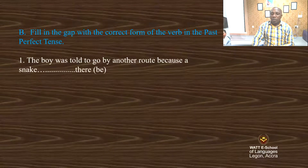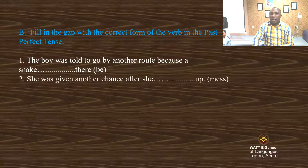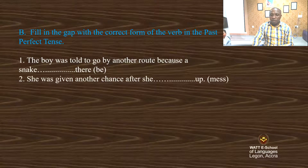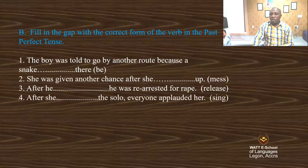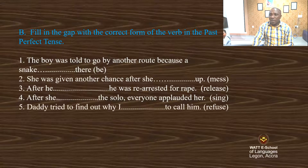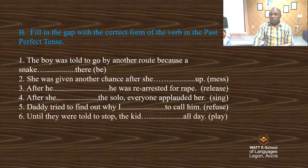One: The boy was told to go by another route because a snake had been there. She was given another chance after she had messed up. He was re-arrested for rape after he had released. After she had sung the solo, everyone applauded her. Daddy tried to find out why I had refused to call him. Until they were told to stop, the kids had played all day.